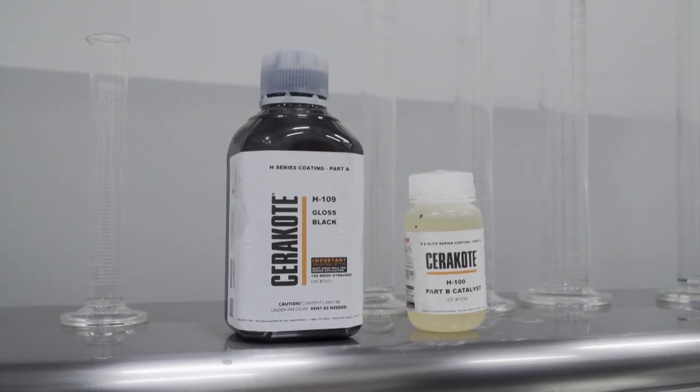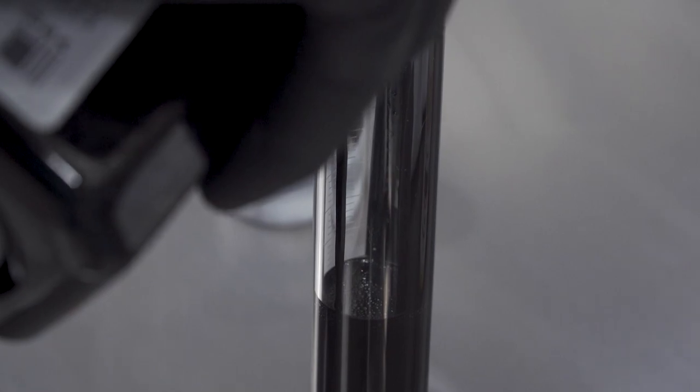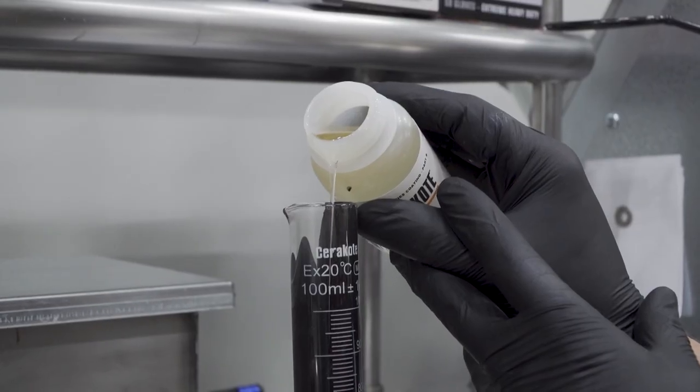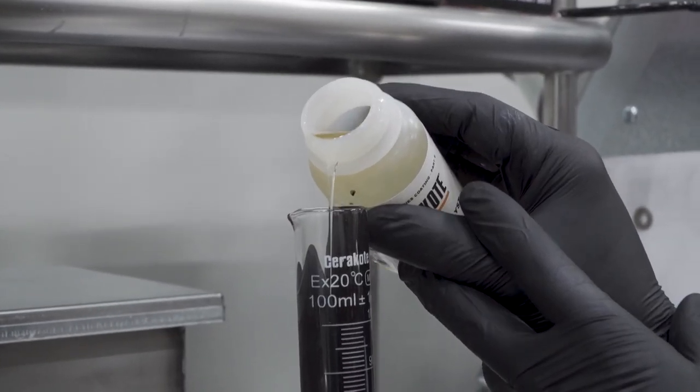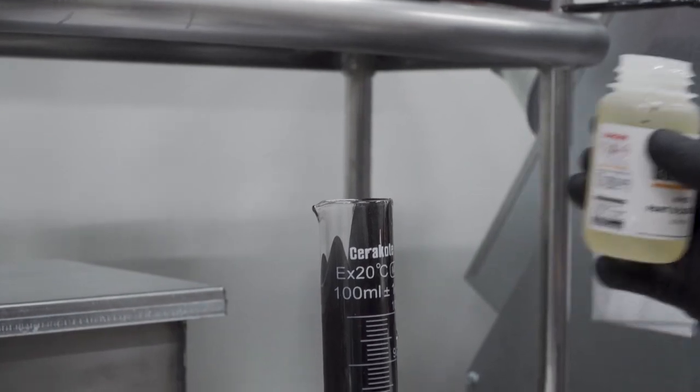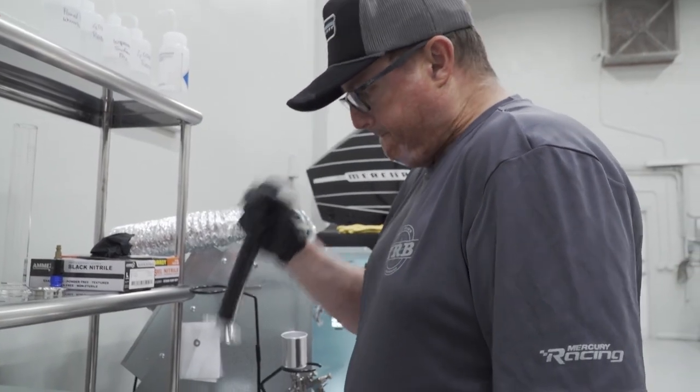When you mix Cerakote, the ratio of product to catalyst dictates the finish that you get. If you want a more glossy finish, you use less catalyst. By adding more catalyst, you'll go from a satin to a matte finish.